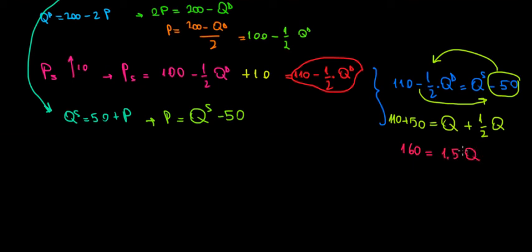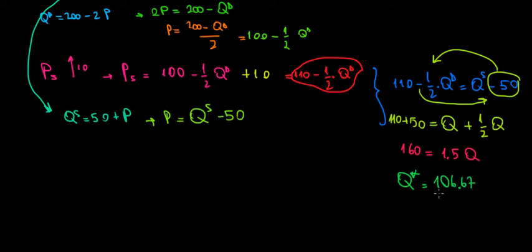Now let's solve for the equilibrium quantity. Using a calculator: 160 divided by 1.5 equals approximately 106.67. So the equilibrium quantity with the subsidy is 106.67 panels — that's how much is going to be sold on the market.